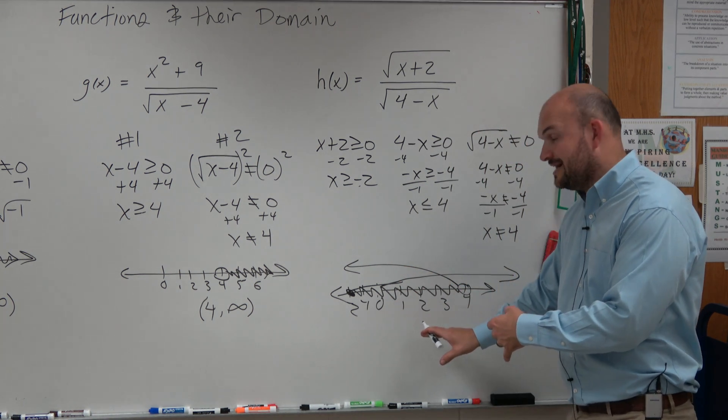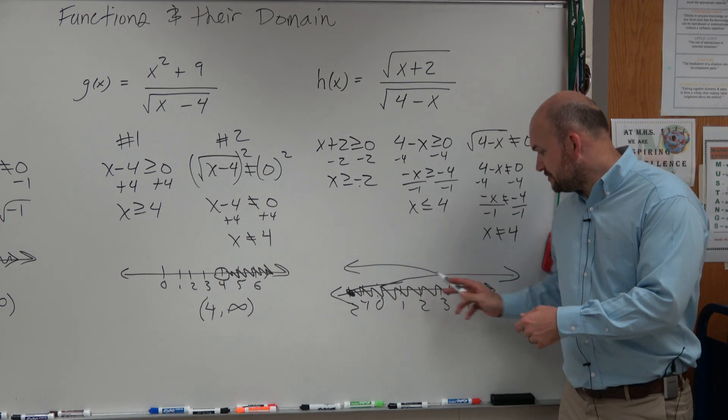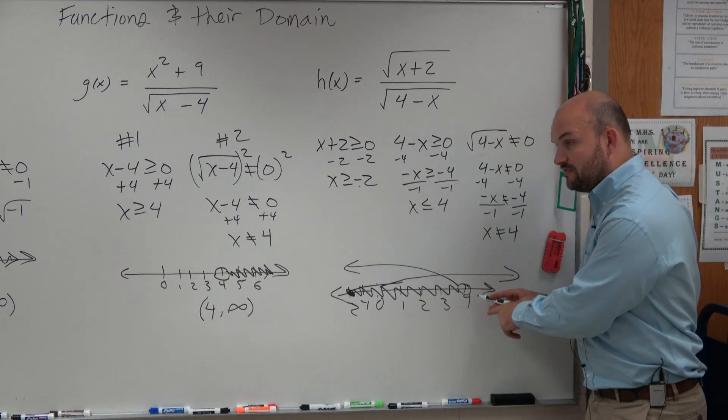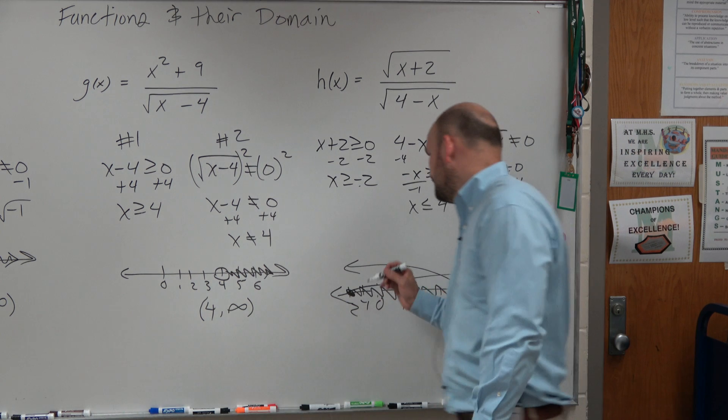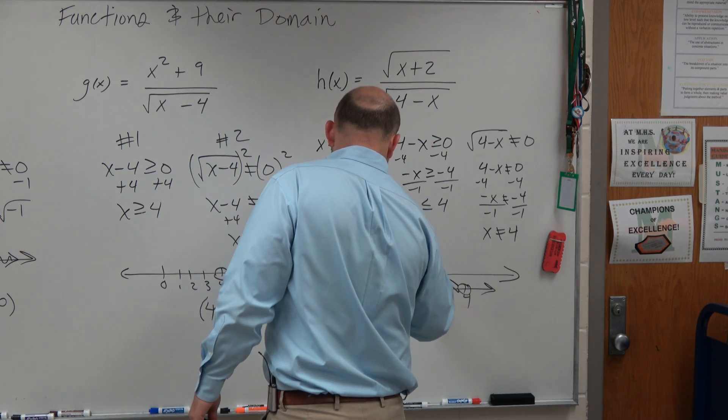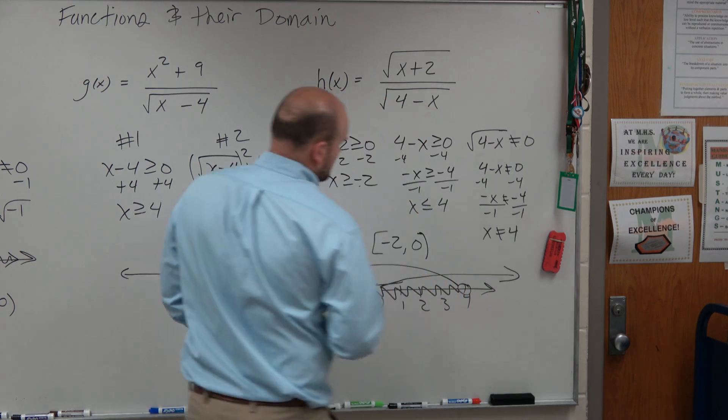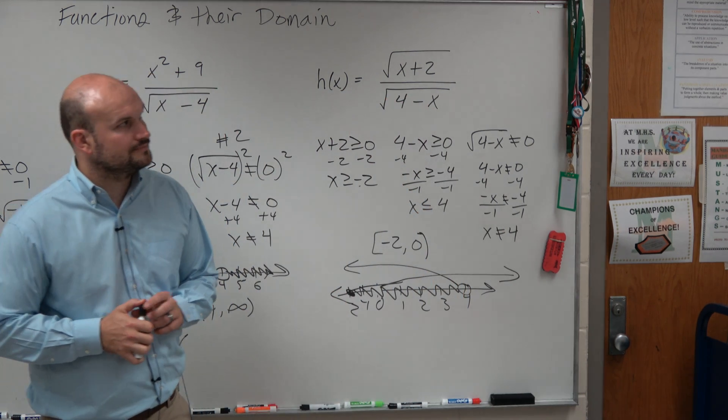So the domain, then, is only between negative 2 and 4. Negative 2 is included. 4 is not included. So you'd write the domain like this: negative 2 comma 4. It'll look like that.